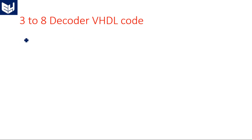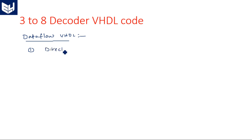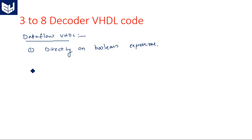So first we will see the data flow model — data flow VHDL for this 3-to-8 decoder. In data flow there are two styles. First is directly writing on Boolean expressions. Second style is with conditional statements, which I will explain after the completion of the first style.